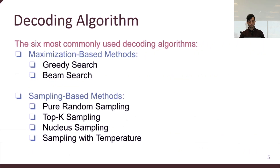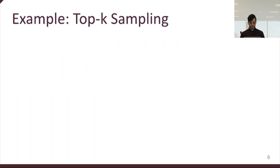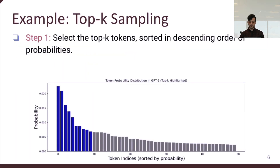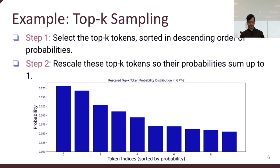The paper considers six decoding algorithms, the most popular ones at the time of writing. These can be categorized as maximization-based methods like greedy and beam search, and sampling-based methods like pure random sampling, top-K sampling, nucleus sampling, and sampling with temperature. In top-K sampling, the model picks the top K tokens with high probability, rescales them to sum to one, and samples based on these rescaled probabilities.